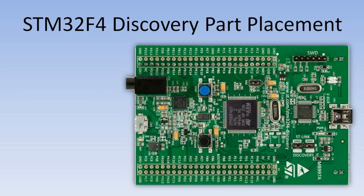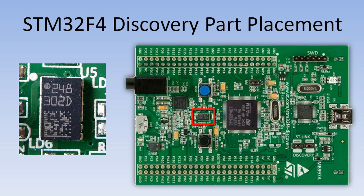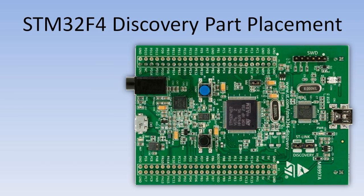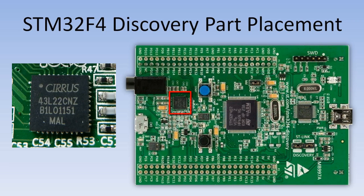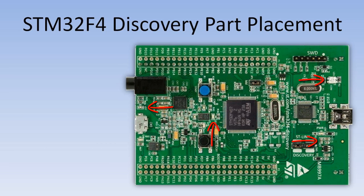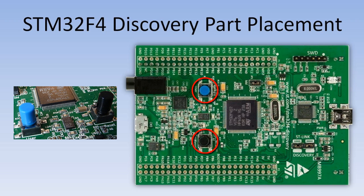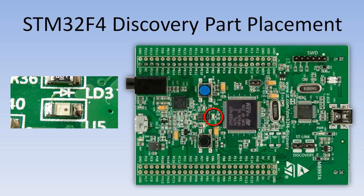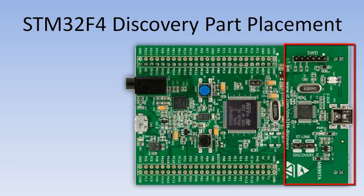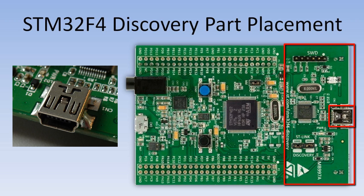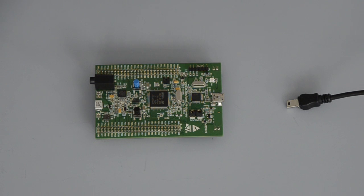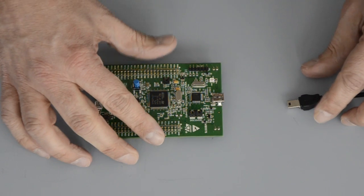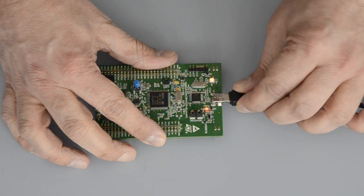The discovery board includes many external peripherals such as a digital accelerometer, a microphone, an audio digital-to-analog converter with speaker amplifier, LEDs, push buttons, and a USB port. For the Plinky example we will use the LED on port D13. The discovery board also includes an ST-Link, and a USB connector labeled CN1 interfaces to this ST-Link.